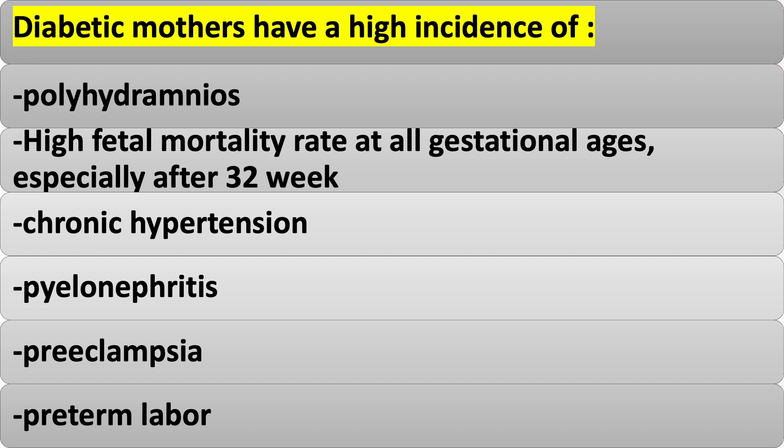Diabetic mothers have a high incidence of polyhydramnios, high fetal mortality rate at all gestational ages especially after 32 weeks, chronic hypertension, pyelonephritis, preeclampsia, and preterm labor.